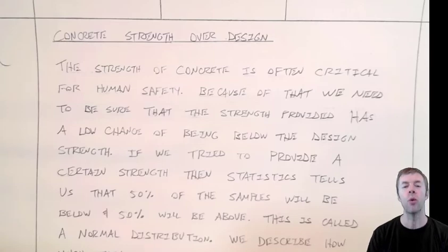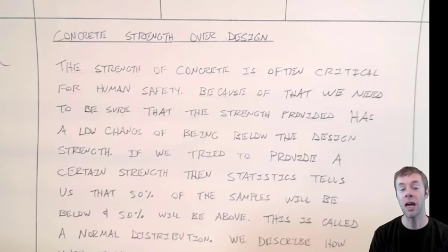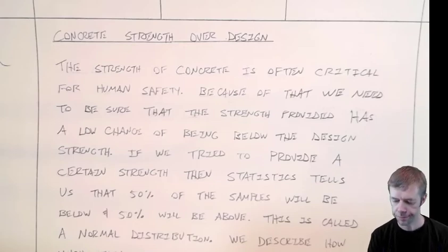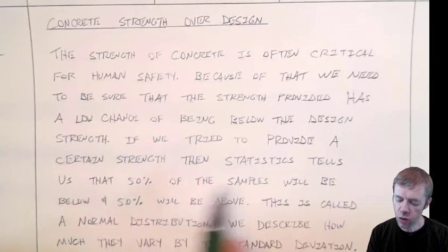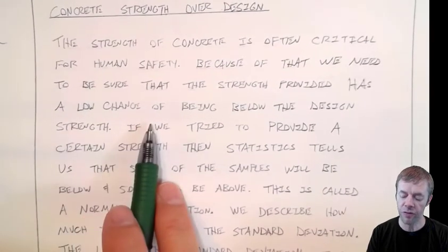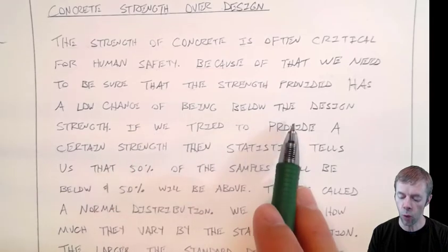Because of that we have to put some safety factor on top of our typical design strengths to make sure we account for variability in the materials, in the testing, in the construction. Ultimately we want this to have a very low chance of our provided strength being below the design strength.